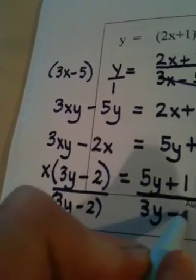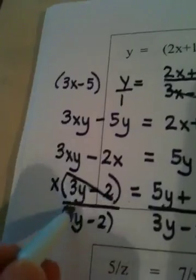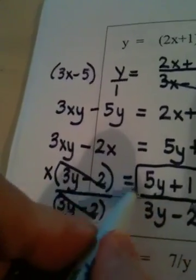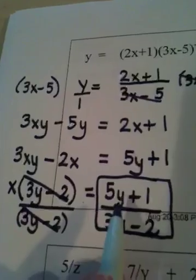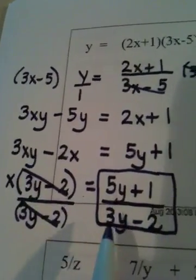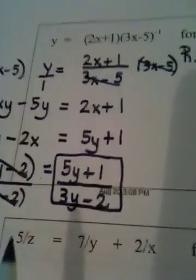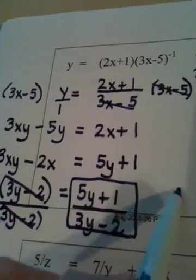And now I divide. I divide both sides by 3y minus 2. What I do to one side I do to the other. These cancel and this is my answer for x. So x is equal to 5y plus 1 divided by the quantity 3y minus 2. Now there's one additional thing we need to be careful of.